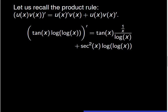In order to find the derivative of the quantity tangent of x times logarithm of logarithm of x, we need to use the product rule. In this case, the derivative is tangent of x times the fraction 1 over x over logarithm of x, plus secant squared of x times logarithm of logarithm of x.